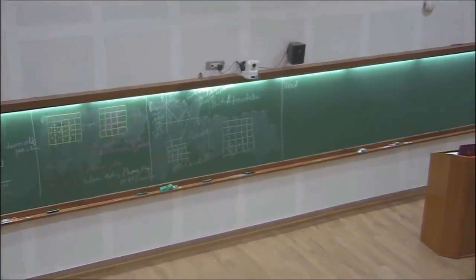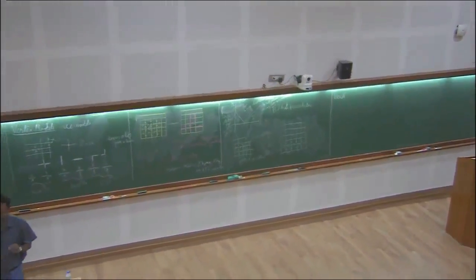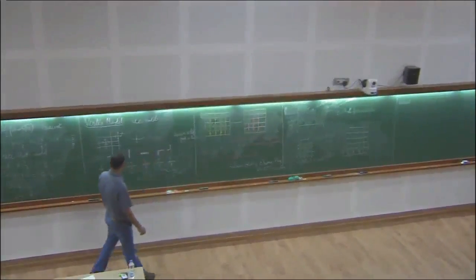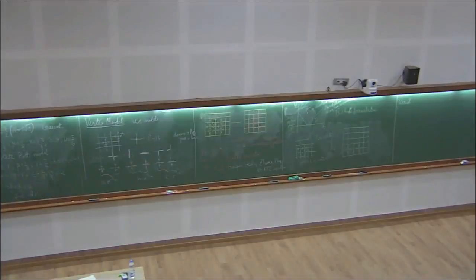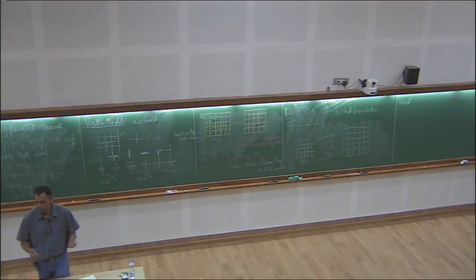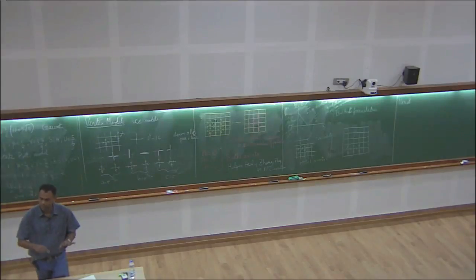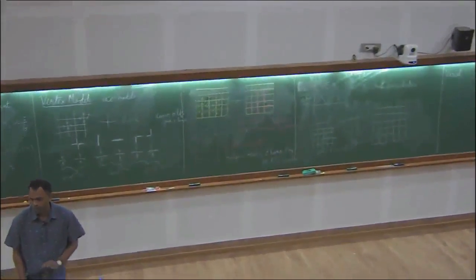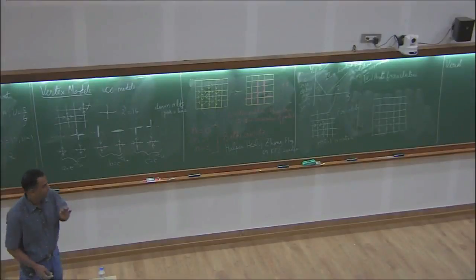Various limits of the six-vertex model correspond to known models. The limit where all energies are equal corresponds to ice. When two energies are equal and the others differ, you get a ferroelectric model. The model has historical motivation from hydrogen dipoles. We now move to the eight-vertex model.